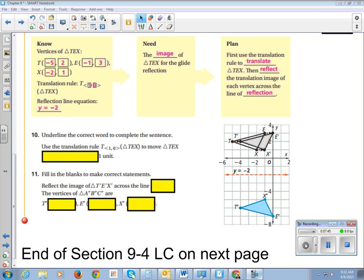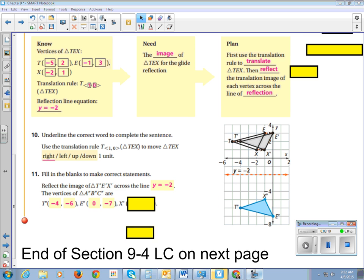All right. So we're going to move triangle TEX one unit to the right. And then we're going to reflect the image of triangle T prime, E prime, X prime across the line Y equals negative two. So T double prime is going to be negative four, negative six. E double prime is going to be zero, negative seven. And X double prime is going to be negative one, negative five.